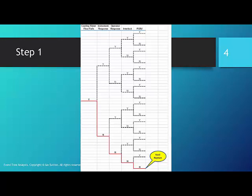Our first safeguard is instrument response. If the instruments recognize the problem and take corrective action, then we follow the upper Y route. It is shown with a dashed line because we are not really interested in pursuing this line anymore since the unsafe condition has been taken care of.